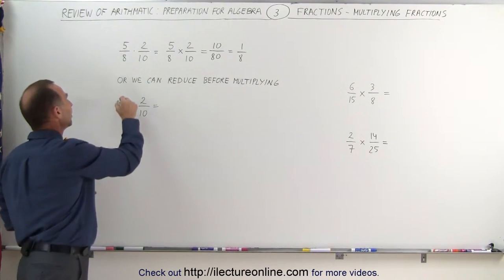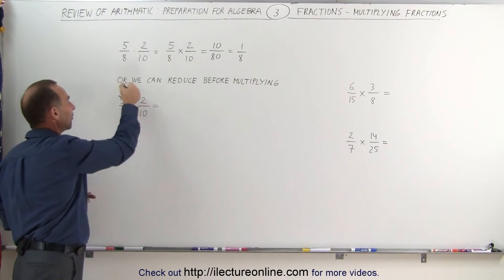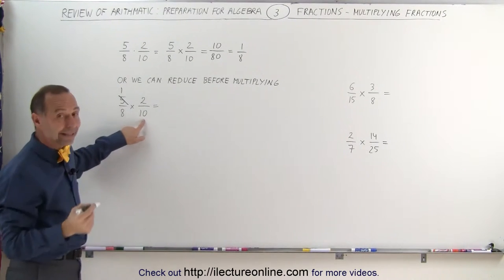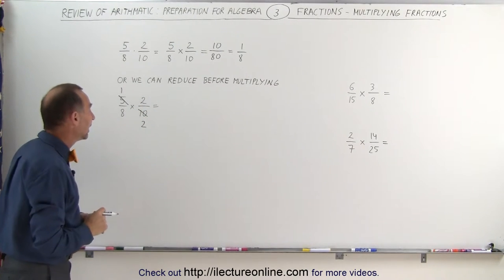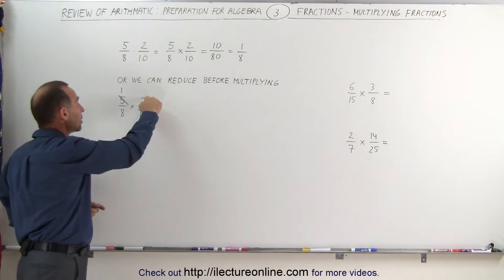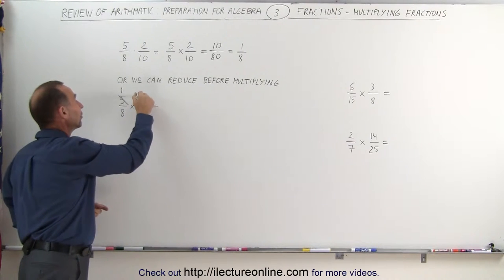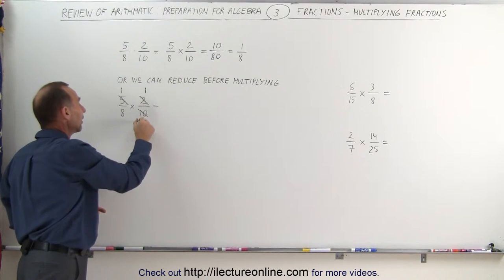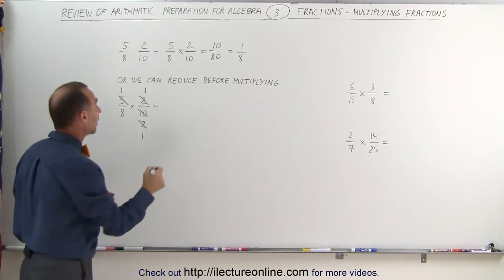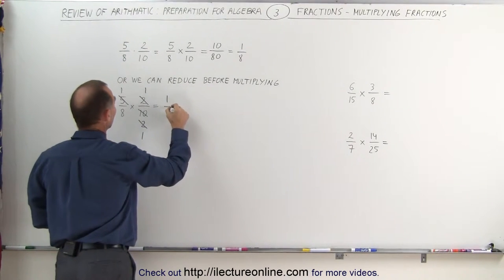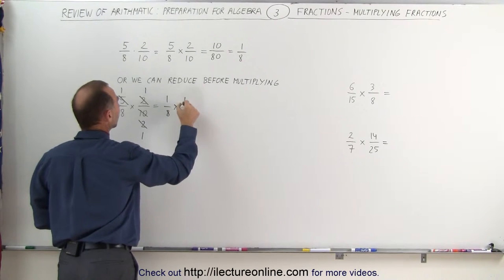5 divided by 5 is equal to 1. So we cross out the 5 and put a 1 there. 10 divided by 5 is equal to 2. So 10 divided by 5 we write 2. In addition to that we see a 2 here and a 2 there. We can divide this 2 by 2 we get a 1. We can divide this 2 by 2 and we get a 1. And all we have left now is 1 over 8 times 1 over 1.